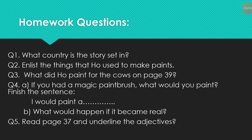Question one: What country is the story set in? Question two: List the things that Who used to make paints. Question three: What did Who paint for the cows on page number 39? Question four has two parts — Part A: If you had a magic paintbrush, what would you paint? Finish the sentence. Part B: What would happen if it became real? Question five: Read page number 37 and underline the adjectives.